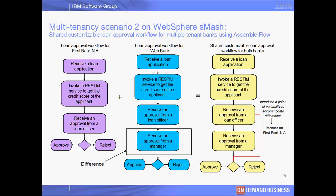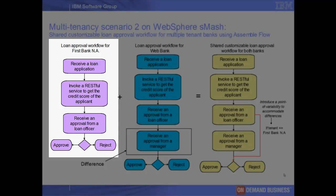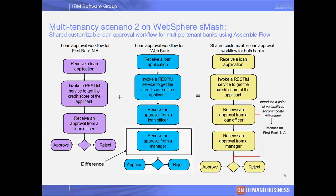In this demo, we will show a shared but configurable workflow instance built using WebSphere MASH in a sample multi-tenant banking application. This workflow is also integrated with portlets running on WebSphere Application Server, Community Edition. The sample application is described in greater detail in an earlier demo in this series. Here we show two simple loan approval workflows for two tenant banks, First Bank NA and WebBank.